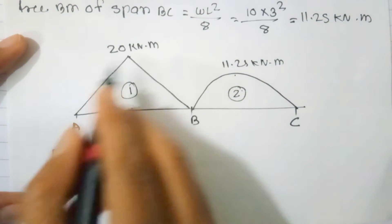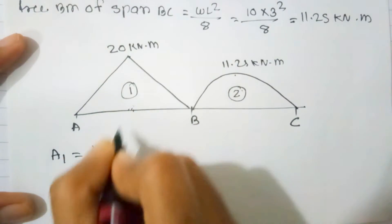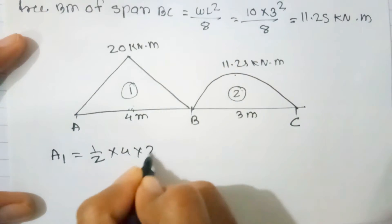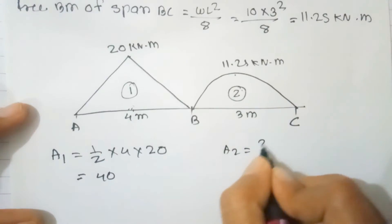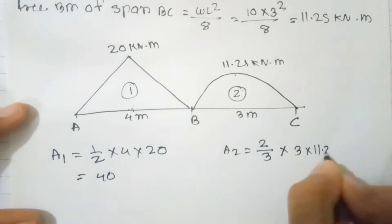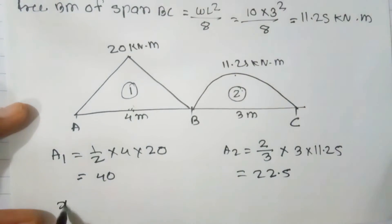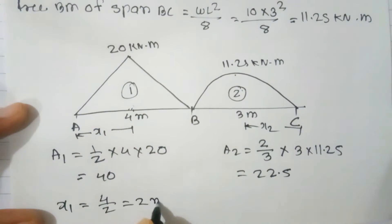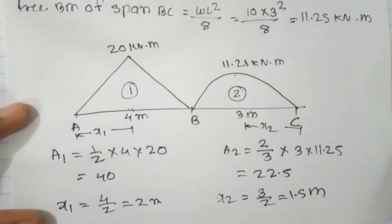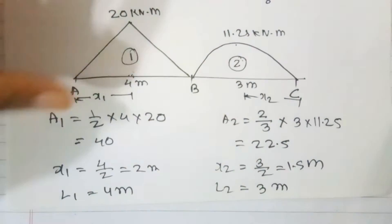Calculate the areas and centroids: A1 is the area under the triangular free BMD for span AB = ½ × base × height = ½ × 4 × 20 = 40. A2 is the area under the parabolic free BMD for span BC = ⅔ × base × height = ⅔ × 3 × 11.25 = 22.5. The centroid x1 from A is L1/2 = 4/2 = 2 m. The centroid x2 from C is L2/2 = 3/2 = 1.5 m. L1 = 4 m and L2 = 3 m.